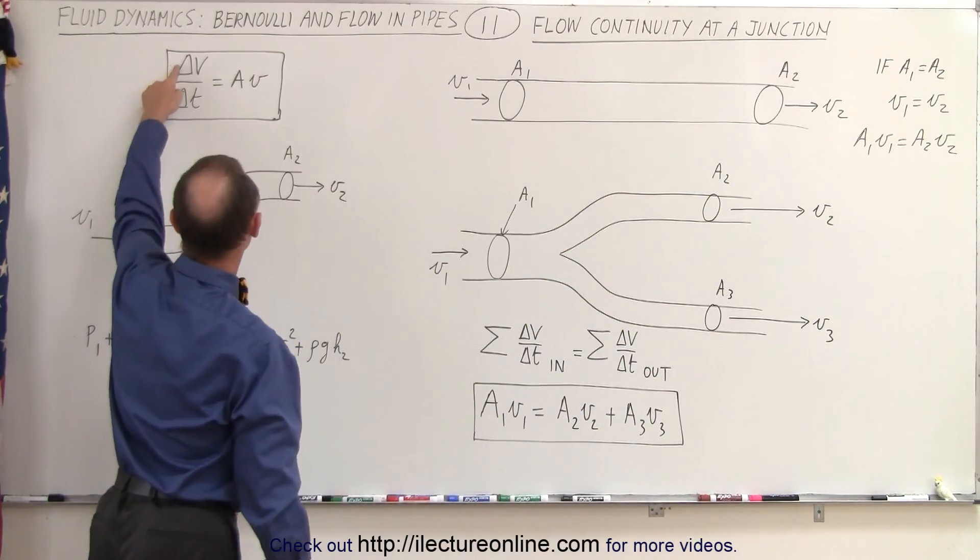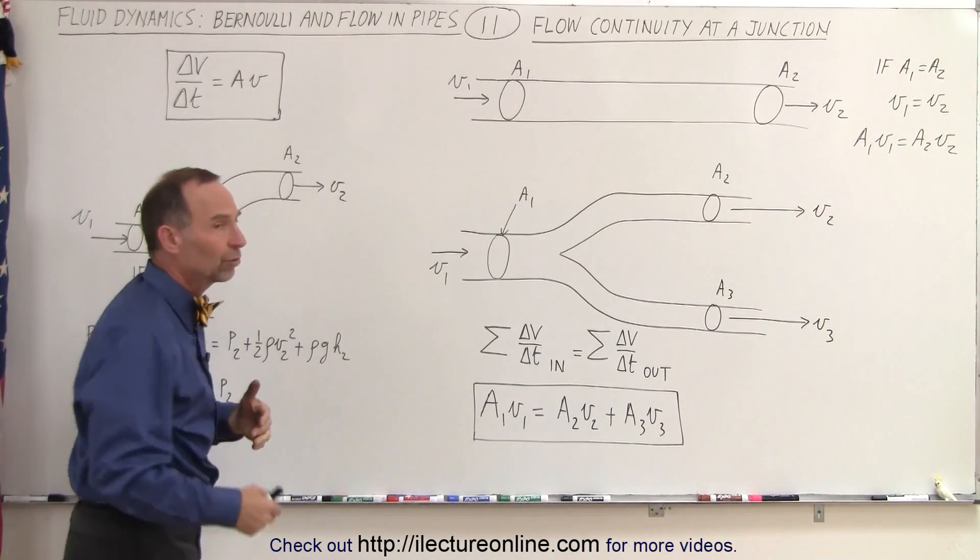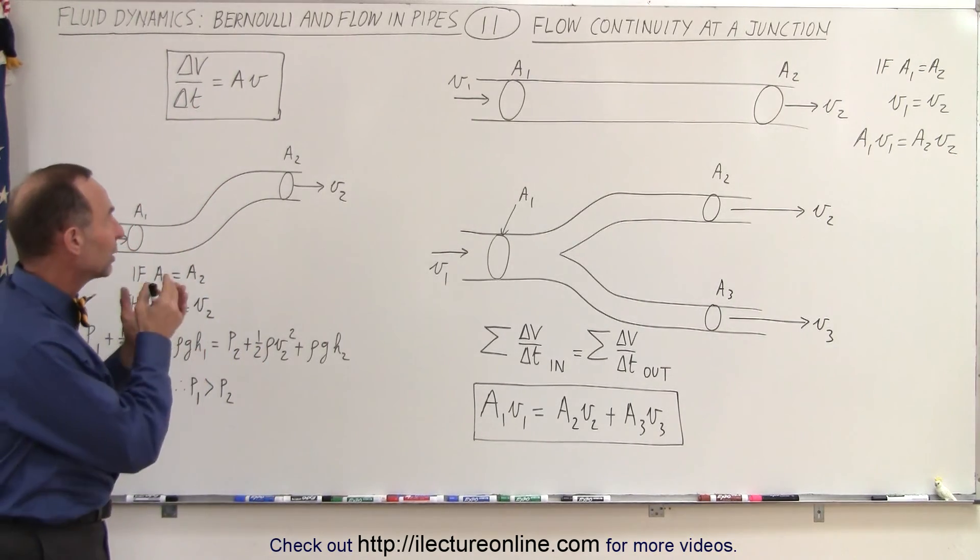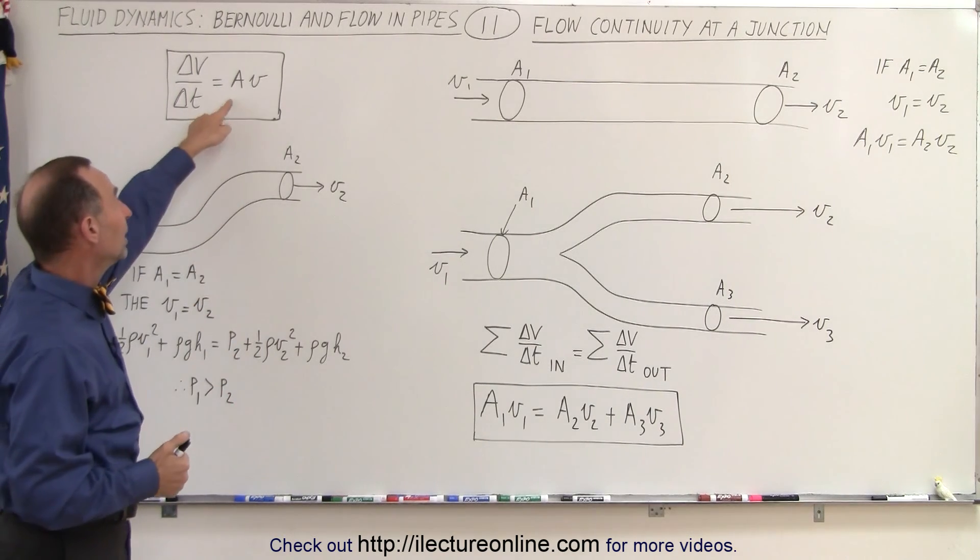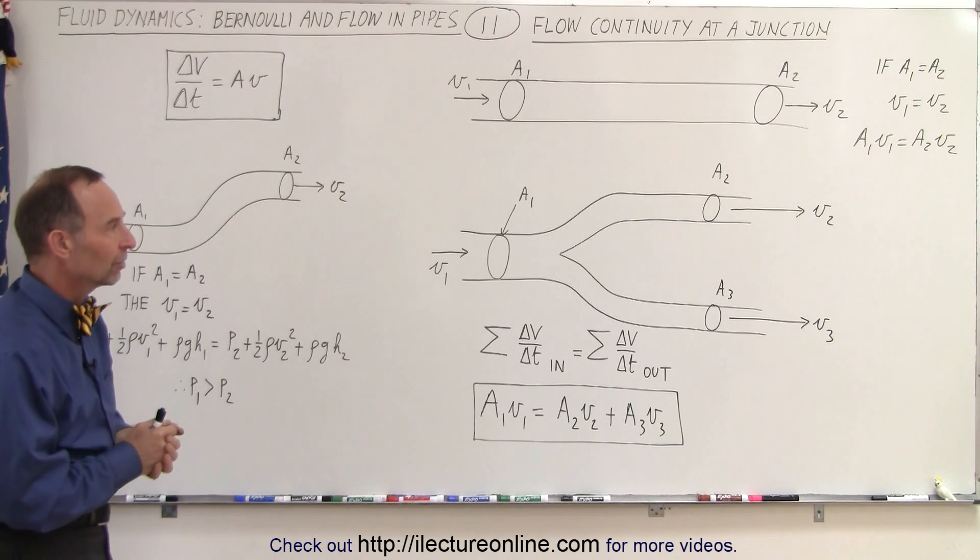Remember that the amount of fluid flowing through the pipe per unit time, delta V delta T, is always going to be equal to the product of the cross-sectional area times the velocity. If neither one of them changes, the other one cannot change either, then everything remains constant.